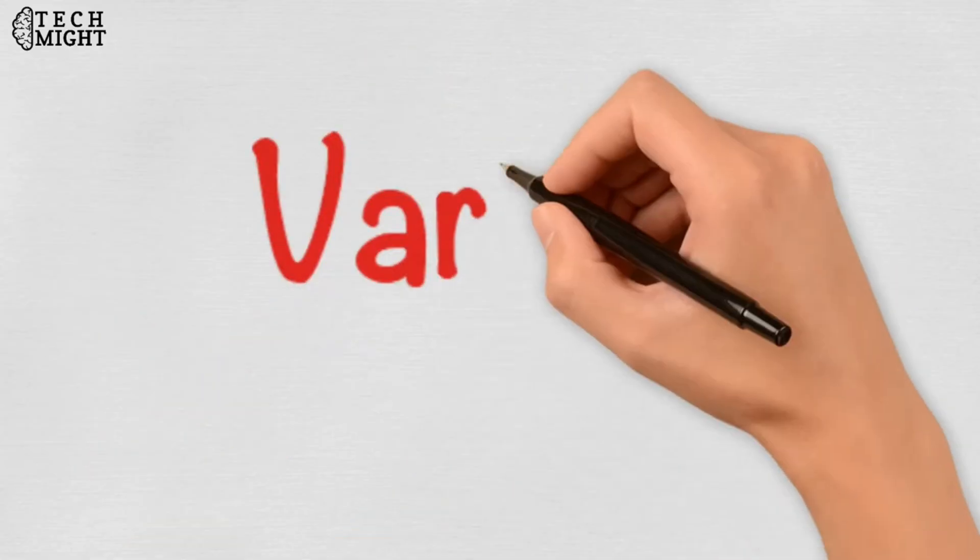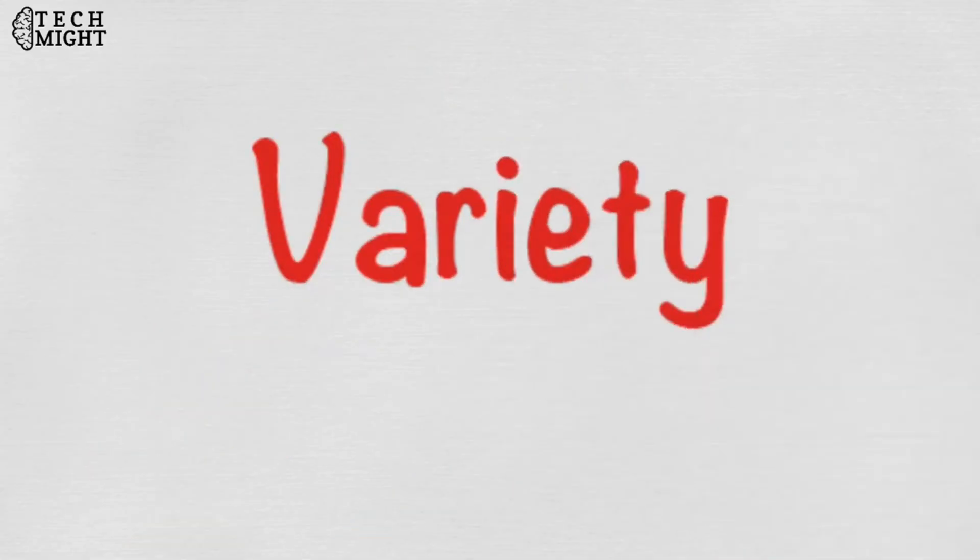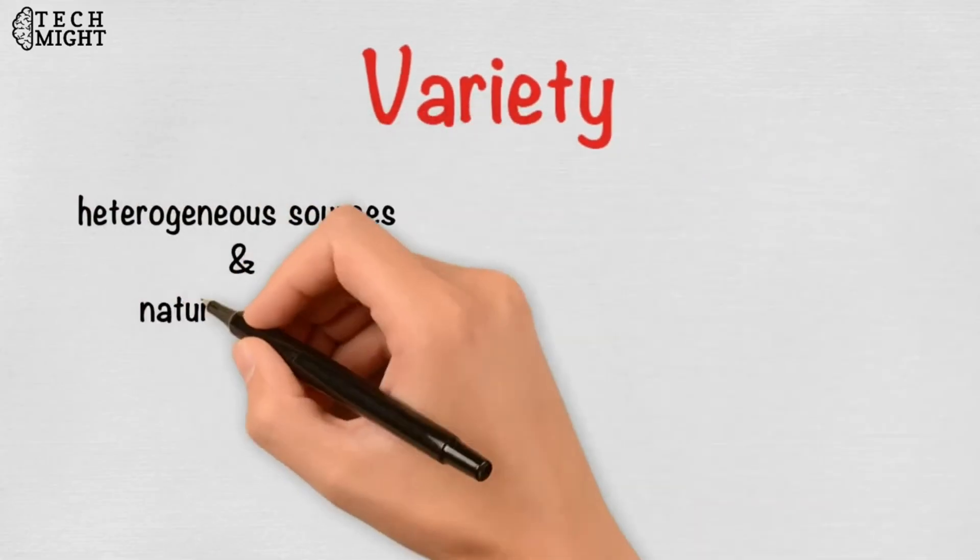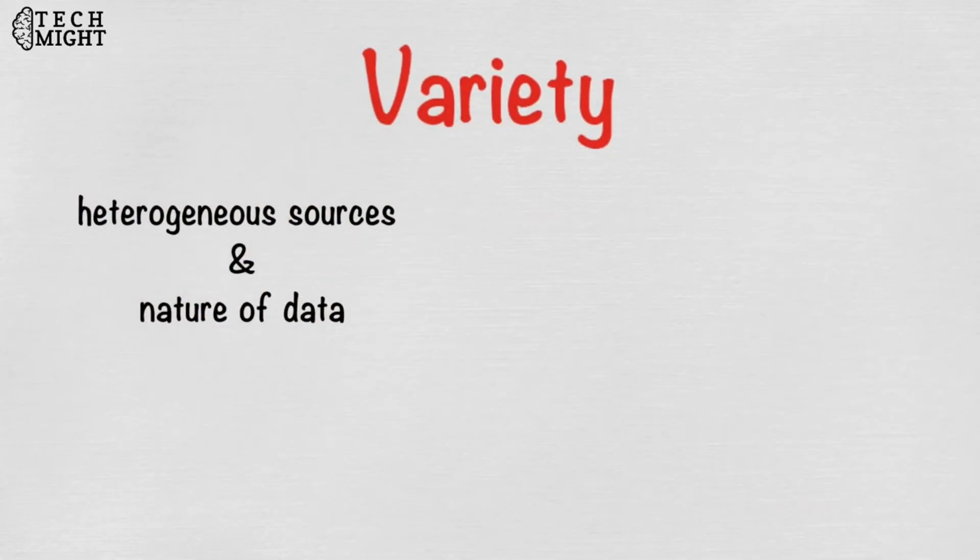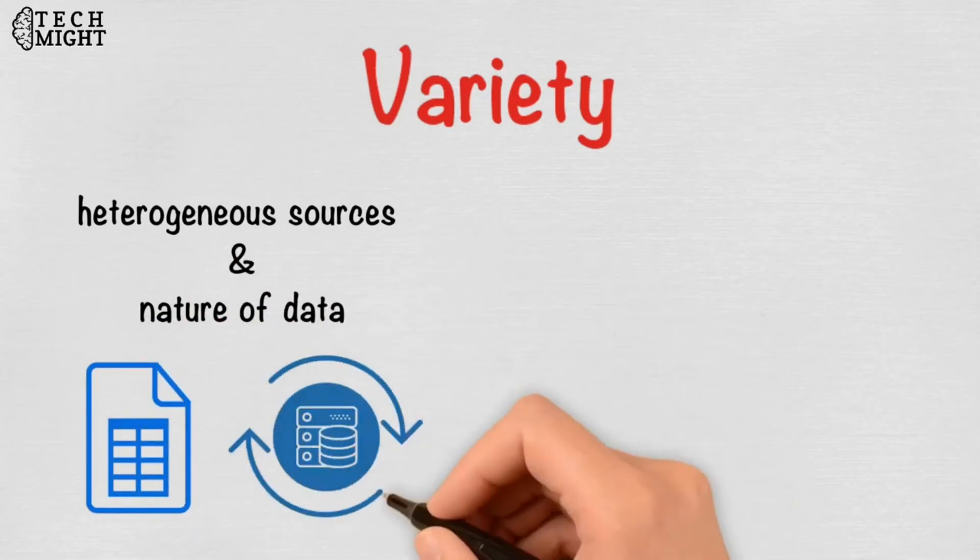The next aspect of big data is its variety. Variety refers to heterogeneous sources and the nature of data, both structured and unstructured. During earlier days, spreadsheets and databases were the only sources of data considered by most of the applications.